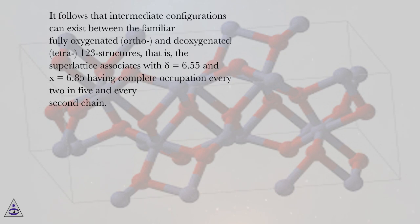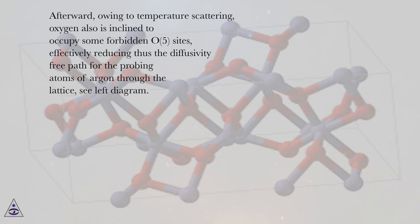That is, the superlattice associates with δ equals 6.55 and x equals 6.85 having complete occupation every 2 and 5 in every second chain.